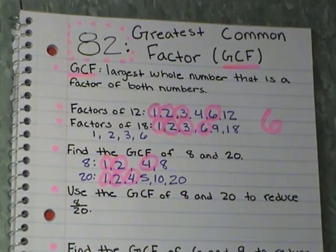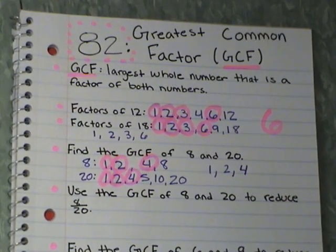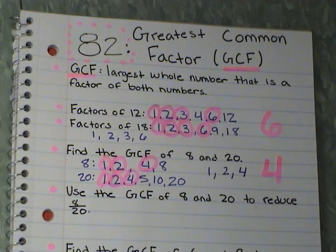Now I look at my factors. You can even rewrite them to help you. 1, 2, and 4. And my greatest one of these numbers is what? 4. So my GCF, my greatest common factor of 8 and 20 would be 4.